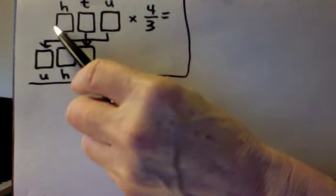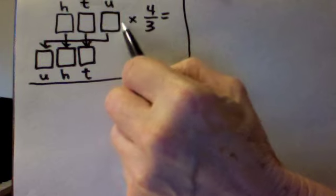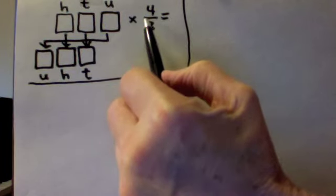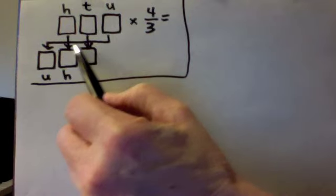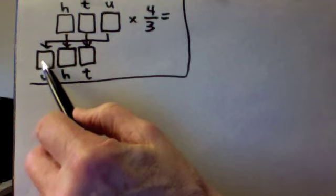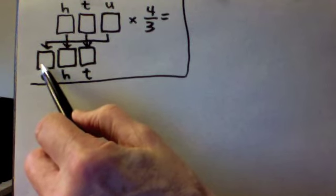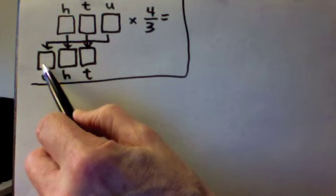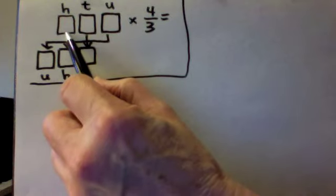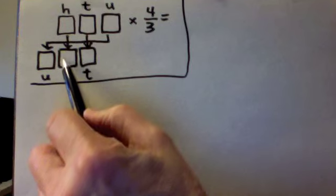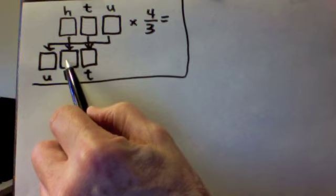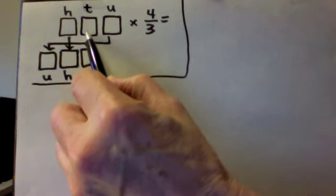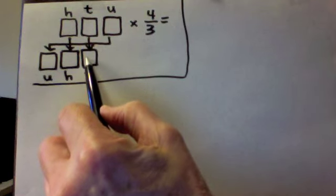We are looking for a three-digit number which multiplied by four-thirds gives a three-digit number in which the units digit is transferred to here becoming the hundreds digit of the new number. The hundreds digit of the original becomes the tens digit of the new number, the tens digit becomes the units digit or the ones digit of the new number.